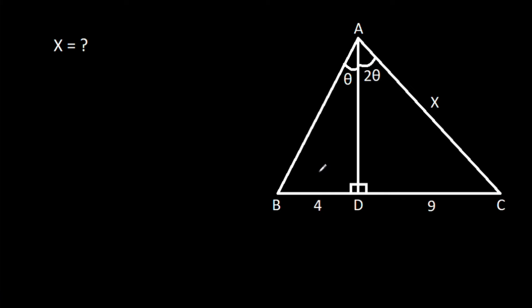In this video, we have been given that angle BAD is theta, angle CAD is 2 theta, BD is 4, CD is 9, and AC is X. We have to find X.